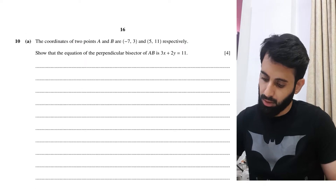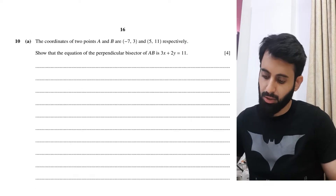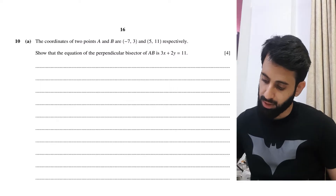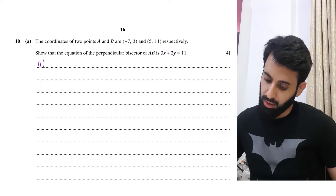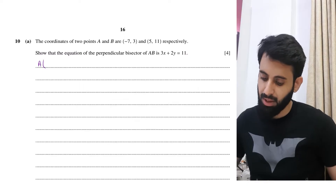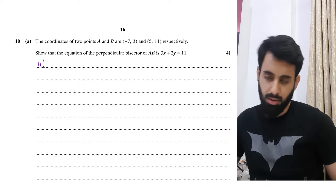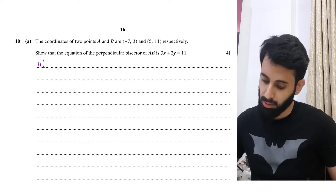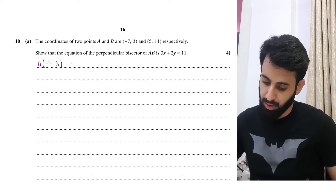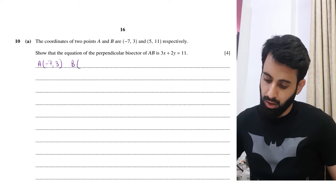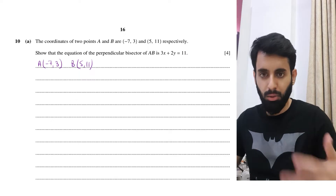The question says: the coordinates of two points A and B are A(-7, 3) and B(5, 11). Show that the equation of the perpendicular bisector of AB is 3x + 2y = 11.